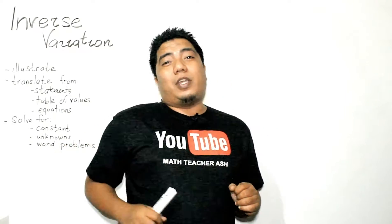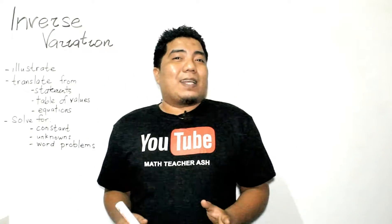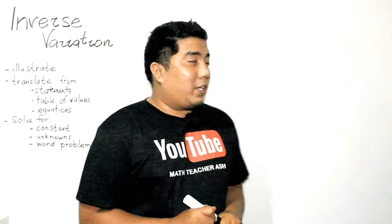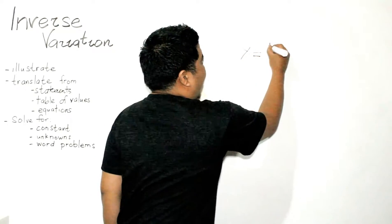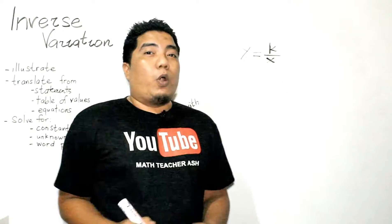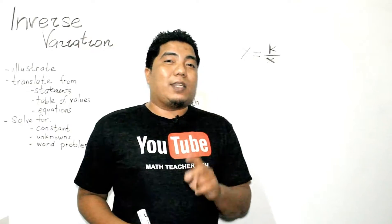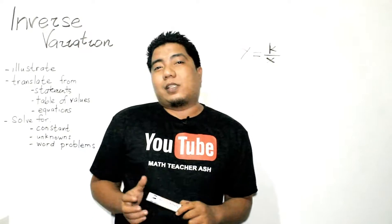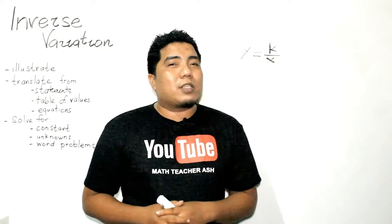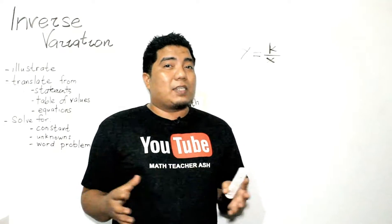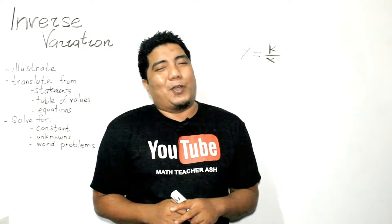How do we illustrate inverse variation? The mathematical statement for inverse variation is y is equal to k over x, where x and y are your two variables or quantities and k is the constant of variation. Remember that among variations, there will always be a constant of variation, and this is a fixed value because it makes the changes uniform.